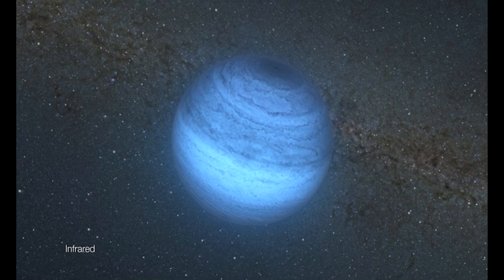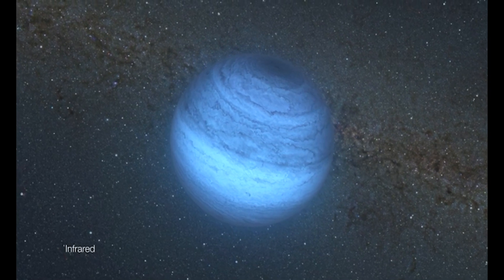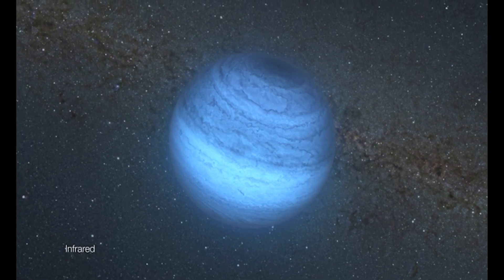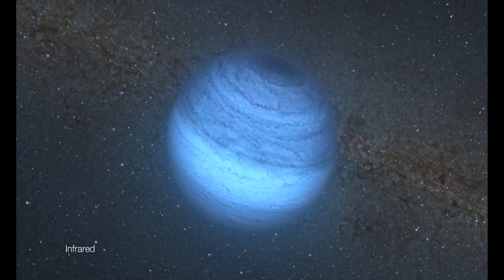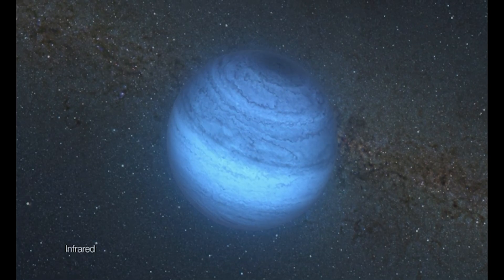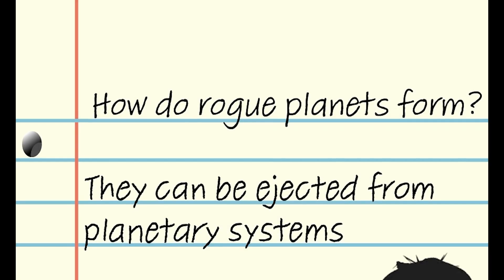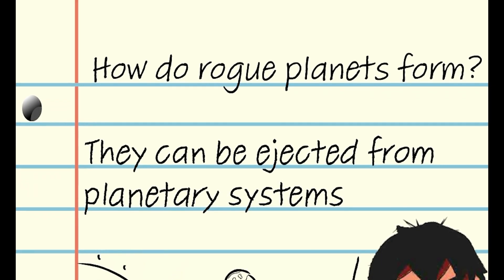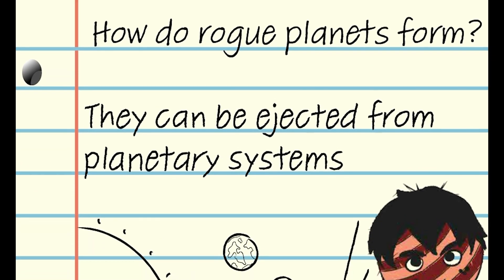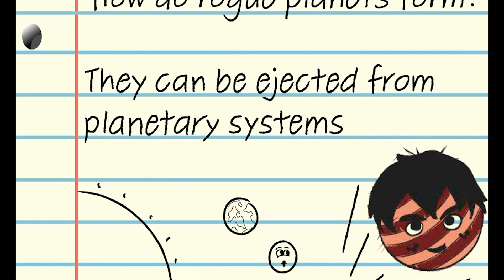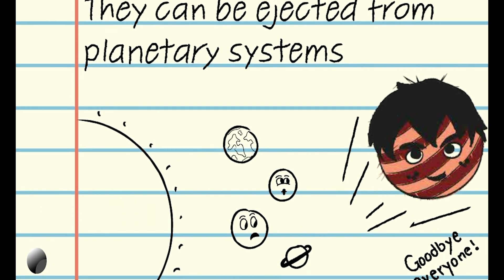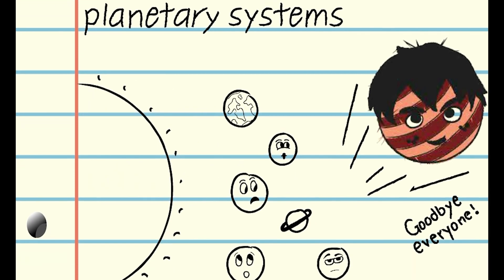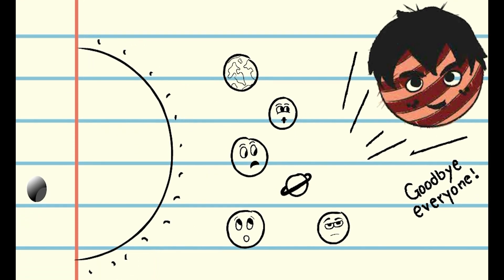There are several thoughts on how rogue planets come to be floating in interstellar space without being part of a solar family. The main method believed to be the cause is ejection from their system during its formation process.